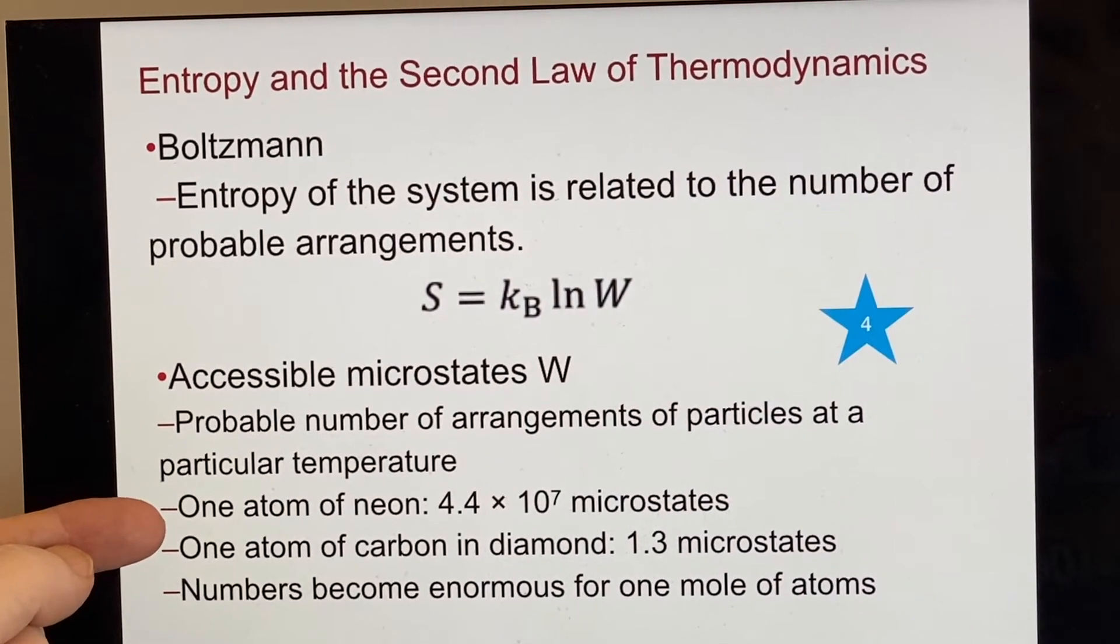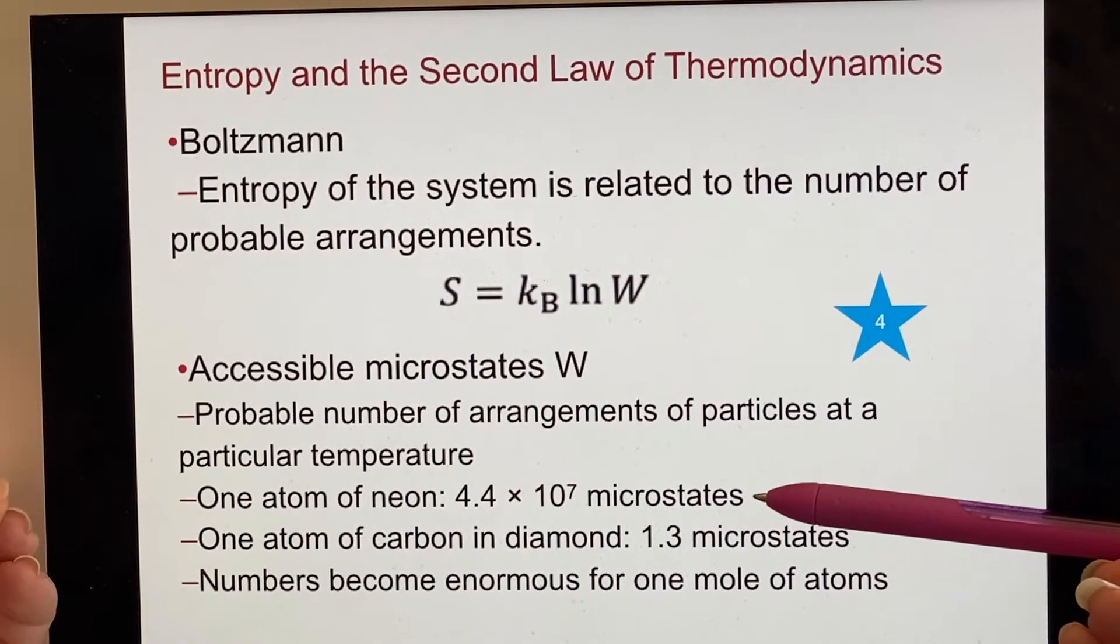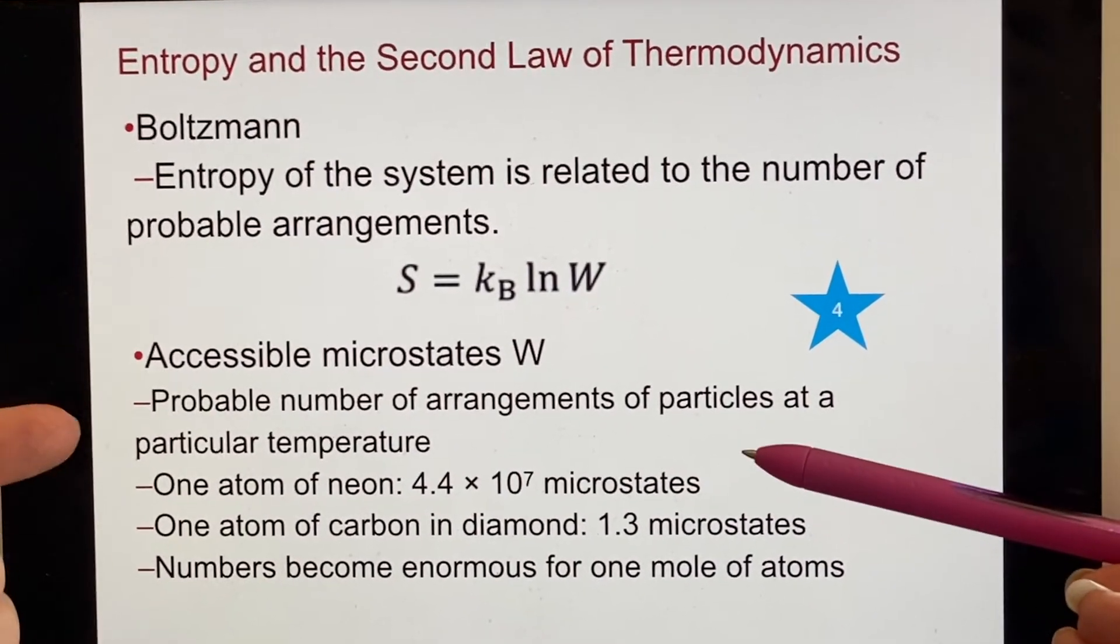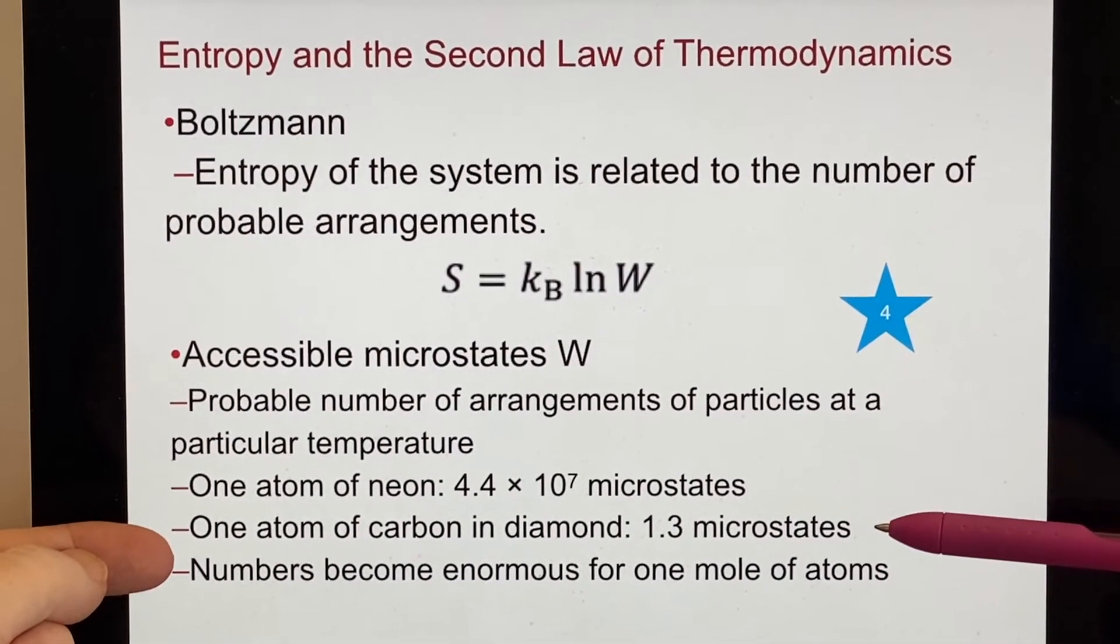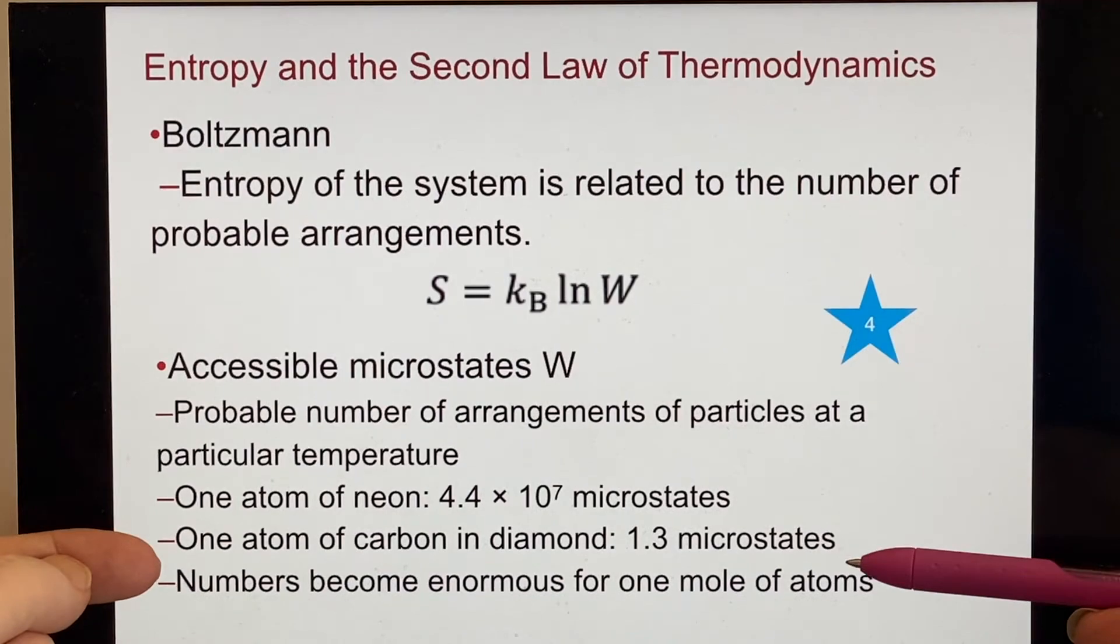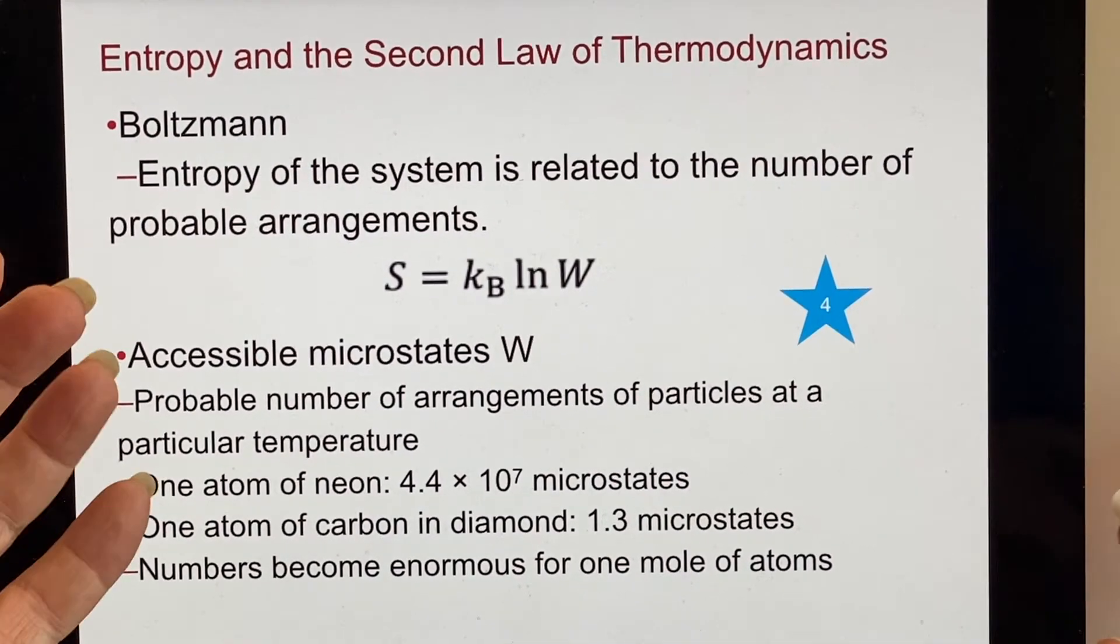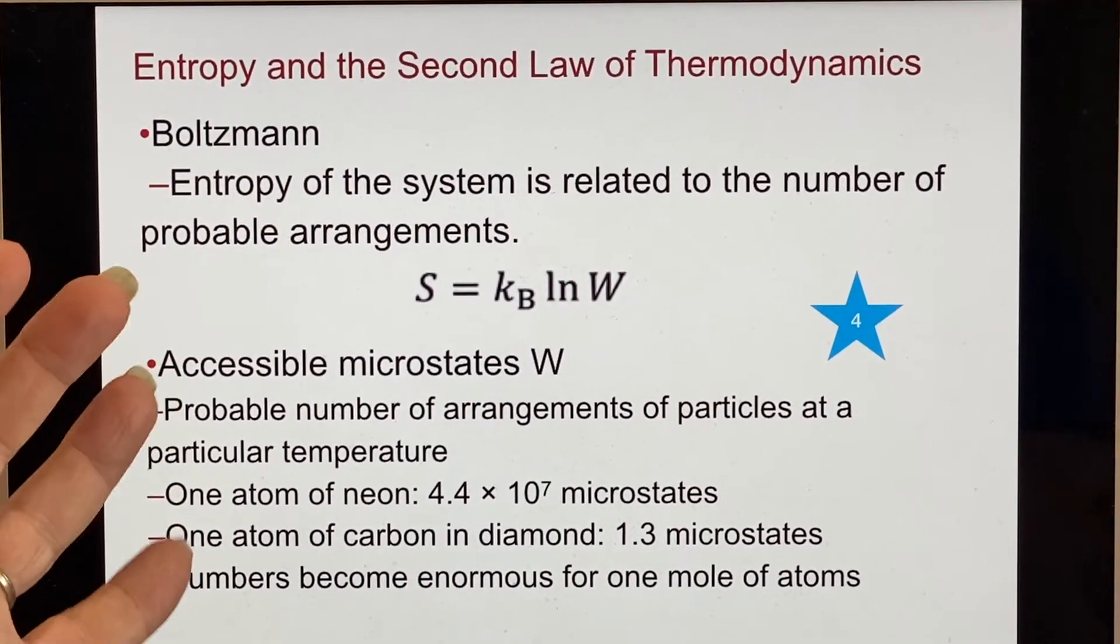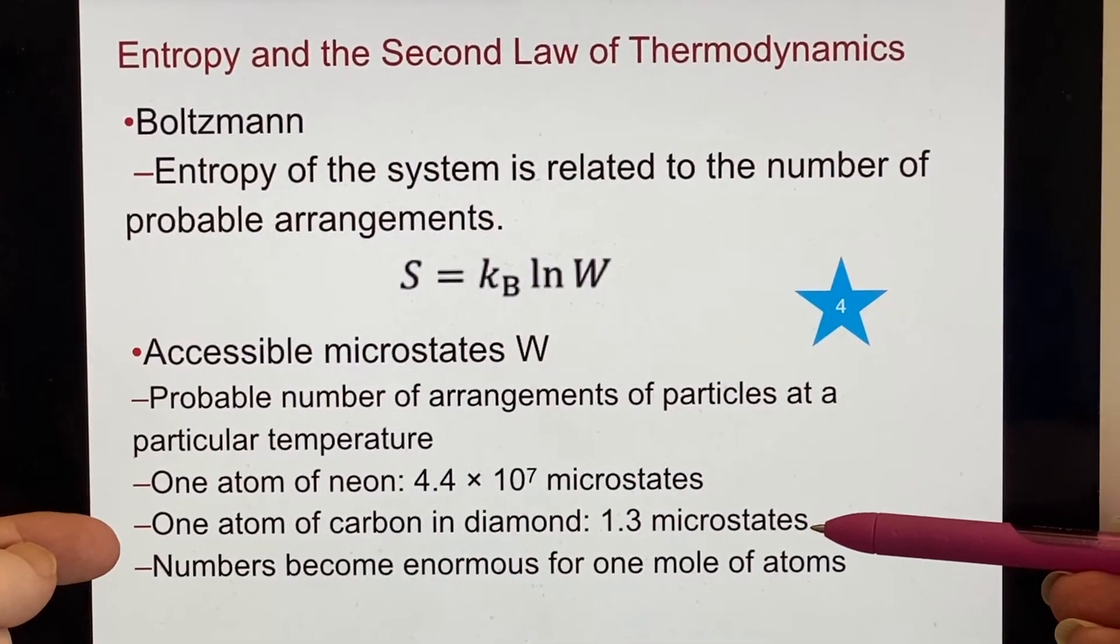If you have something very simple like an atom of neon, well neon exists as a gas at normal temperatures. So it has a lot of different microstates available to it. I mean, this is 44 million microstates. Whoa. An atom of carbon, if it is in a diamond, has only 1.3 microstates. That might be a little bit surprising. You would think it's completely locked in. Wouldn't it just be one? Well, it's still wiggling, right? It's still got a little possibility. It's an atom of carbon. Its nucleus could be moving, right? It's just not able to move away from its location. It could still have some sort of little rotation going on or whatever. And so you end up with far fewer microstates in a solid than you do in a gas.